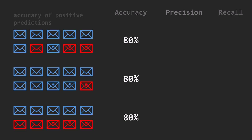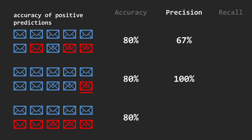As precision is the accuracy of positive predictions, the 1st model managed to correctly label 2 spam emails out of 3 labeled as positive, so precision is 67%. The second model made only 1 positive detection, and it was the correct one, so precision is 100% here, the highest possible.